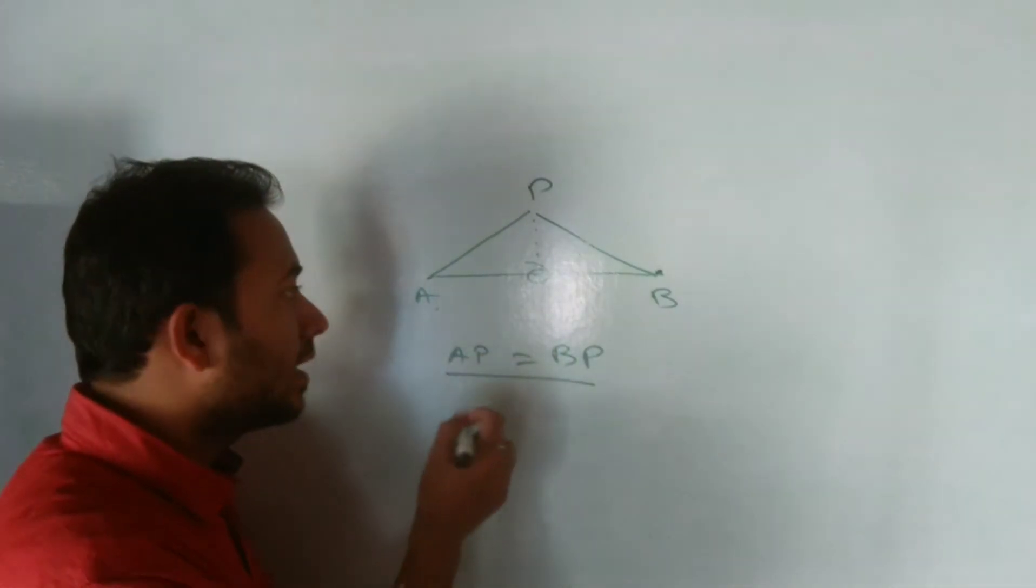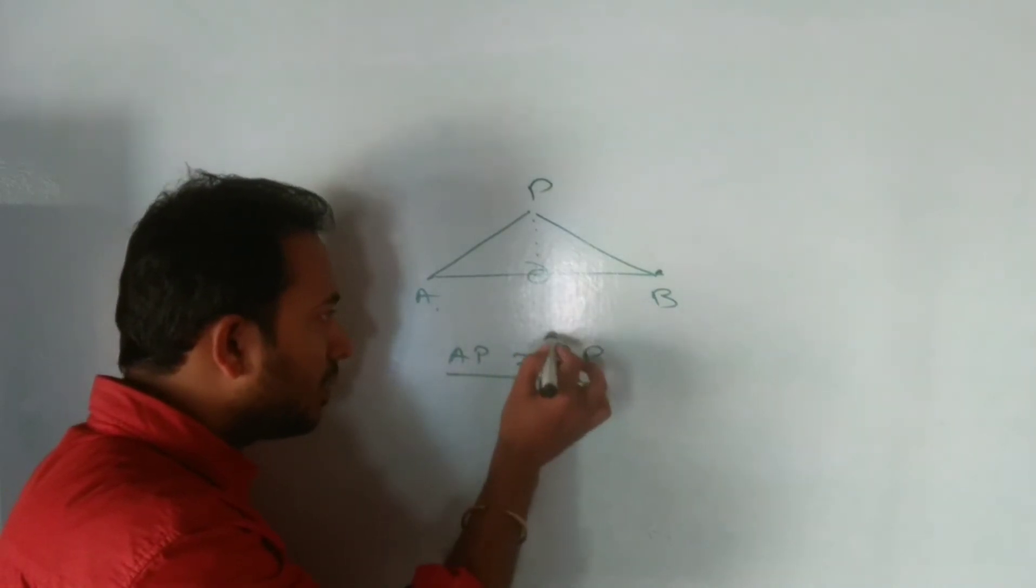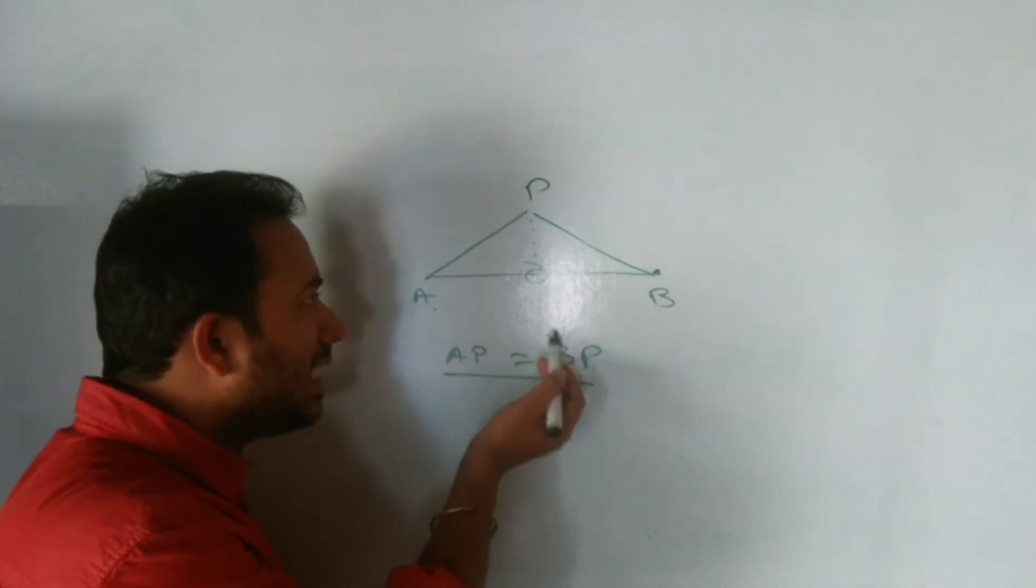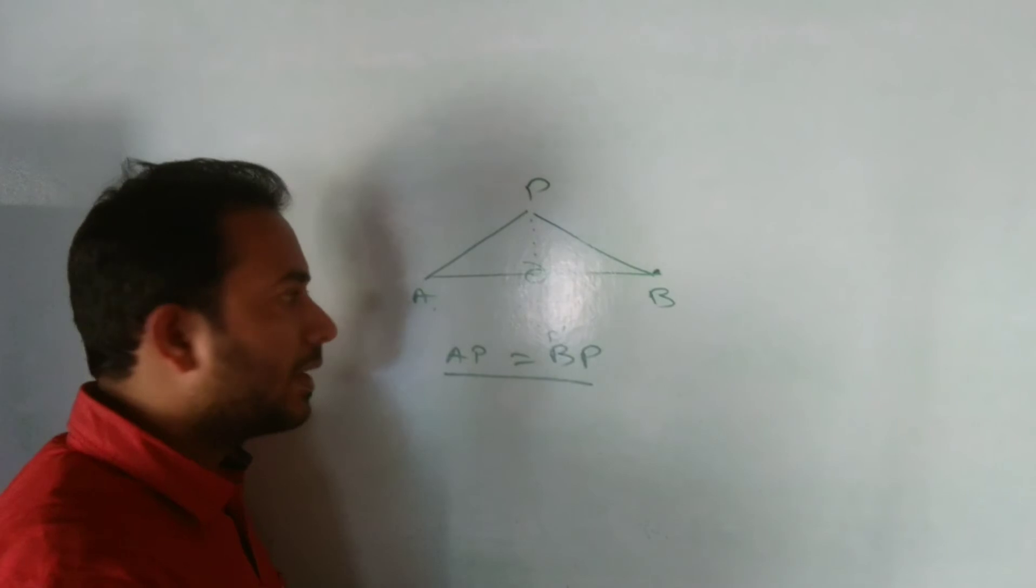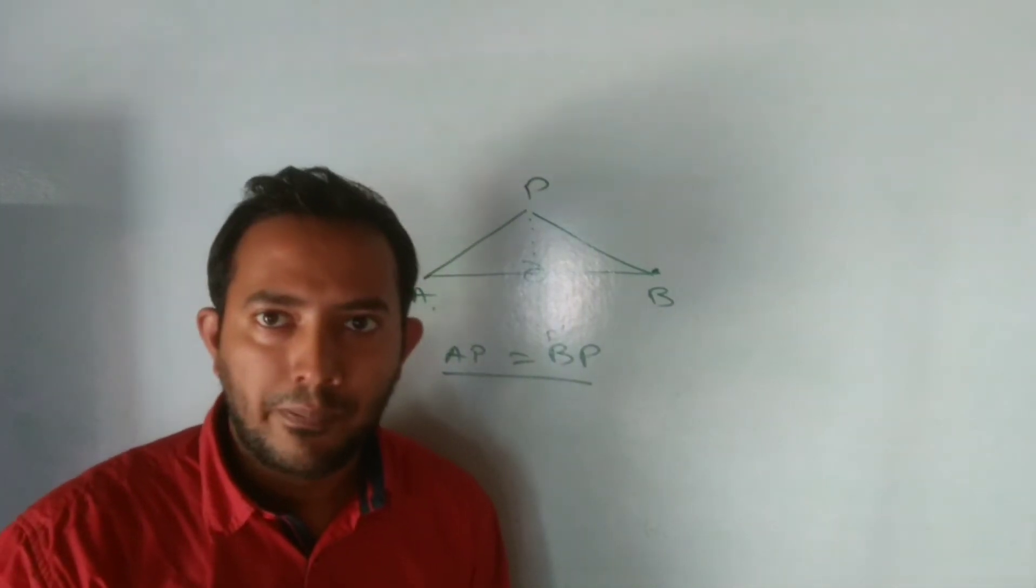They are thinking that if there is a point, take any P dash which is equidistance from A and B, they are thinking that this P dash is on the line segment of AB, that means midpoint they are thinking, and they are using midpoint formula and they are making a mistake.